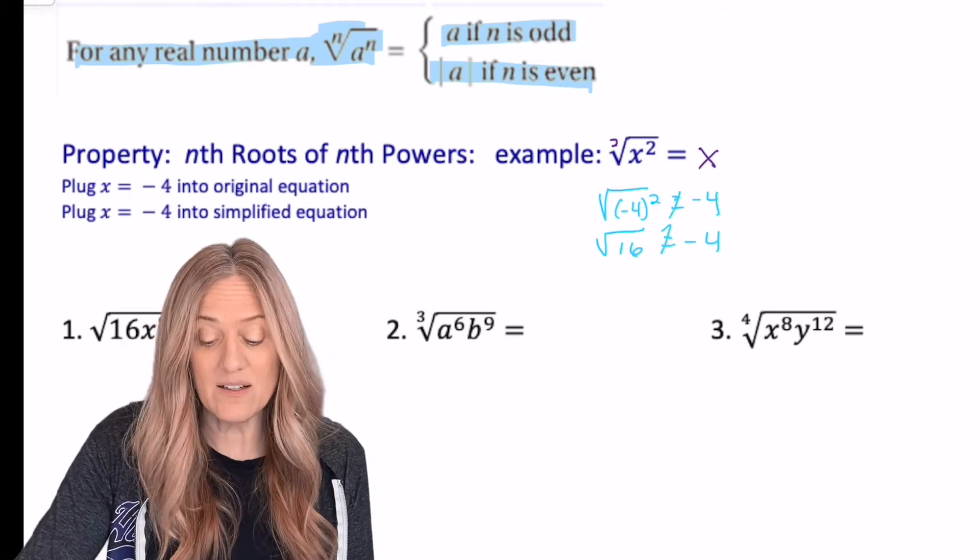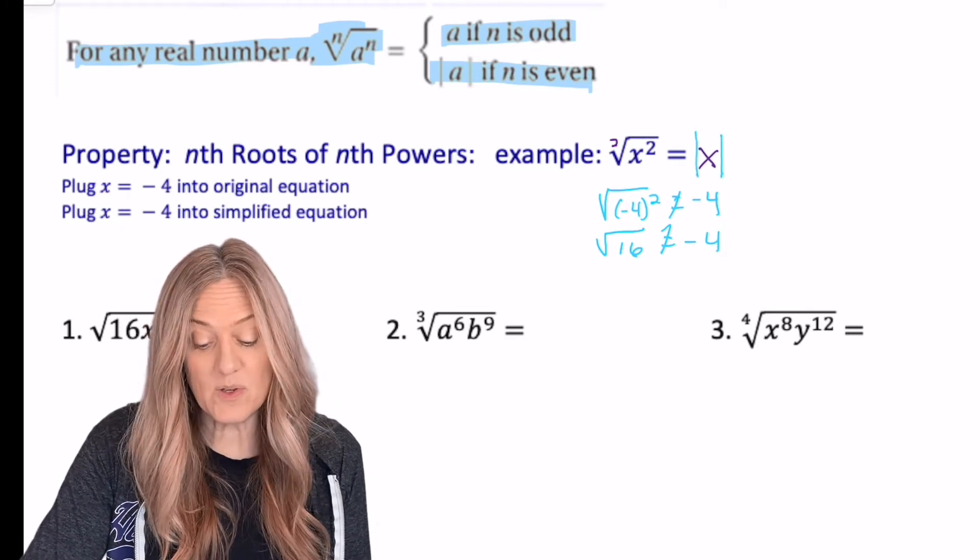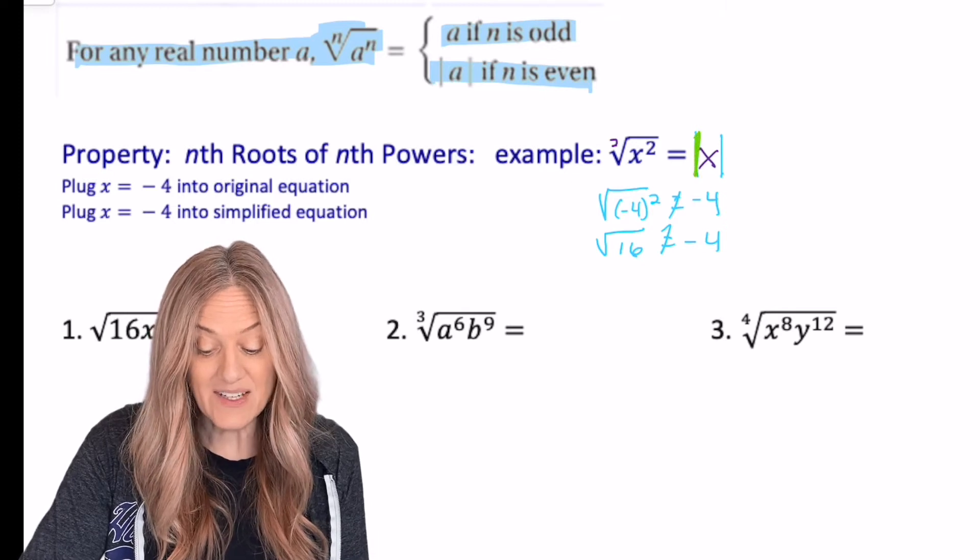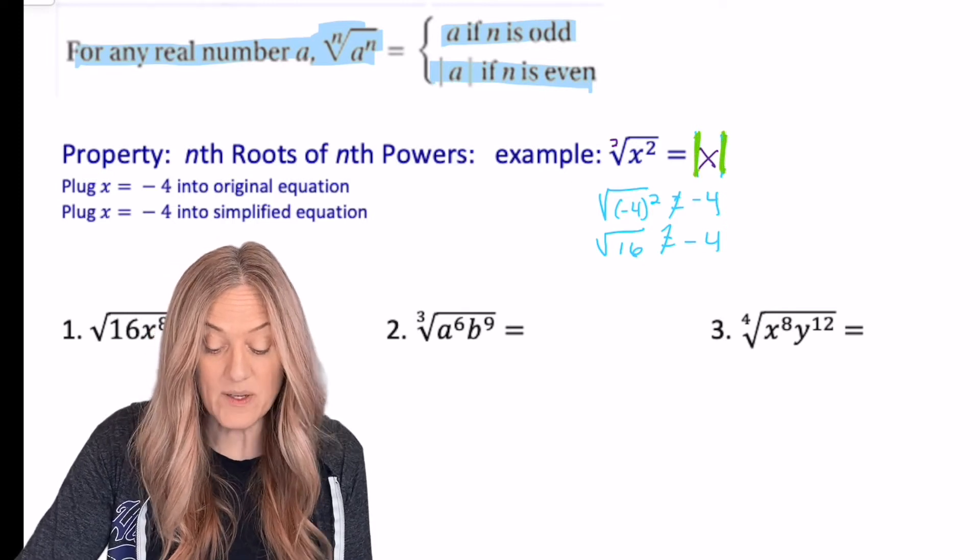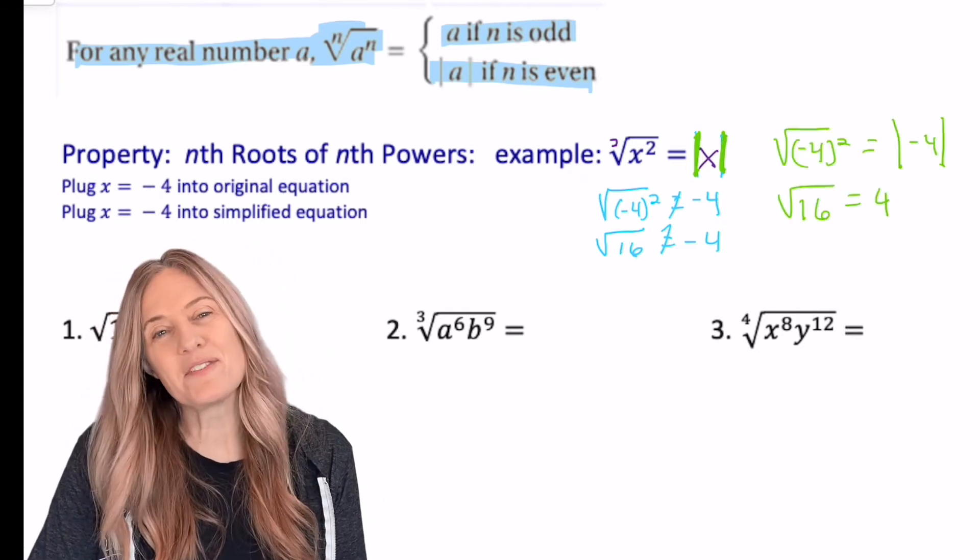That tells us that we needed the absolute value there. What happens when I put those absolute value bars on it because I have an even index? Well, now it's going to be a correct answer. Now I'll have square root of 16 equals four.